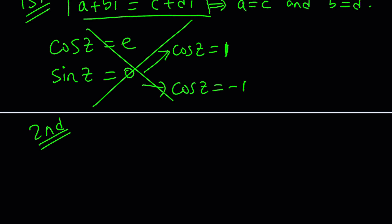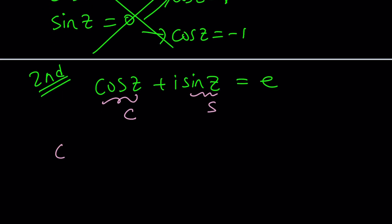Why don't I just use substitution, because substitution is awesome. We'll replace cosine z with c and sine z with s. We know that c squared plus s squared equals one from the Pythagorean theorem, right?